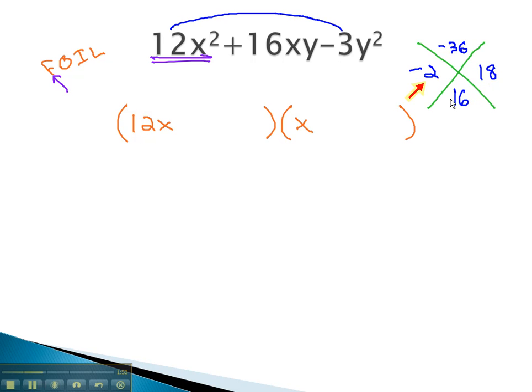We can't divide negative 2 by 12, and we can't divide 18 by 12. There's no way we can make this work with a 12 in one of our factors.